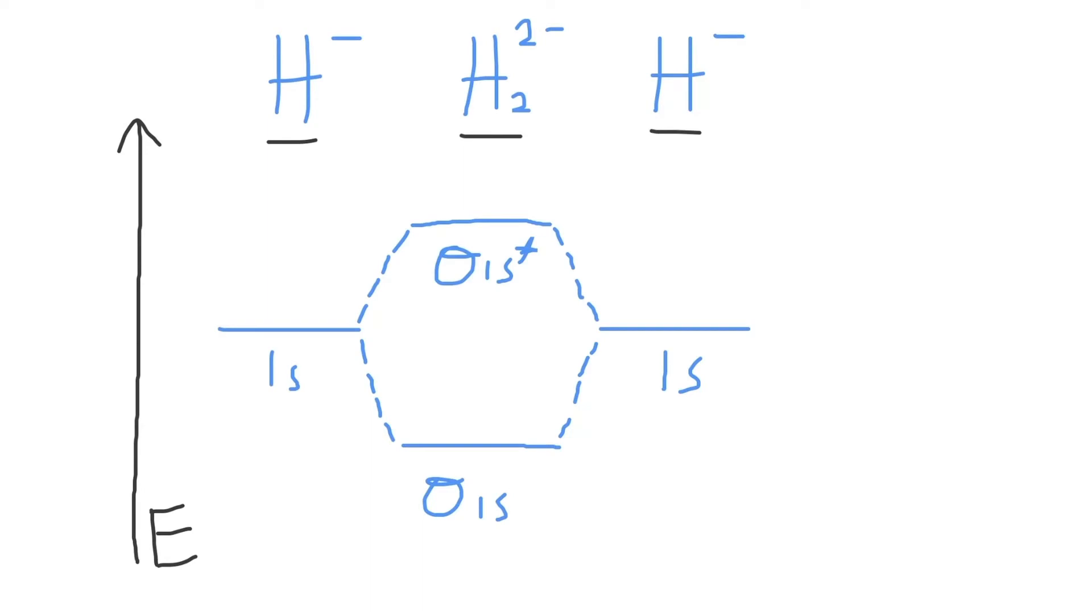So, if we add 1 electron to the original 1 electron of each hydrogen atom, we find that these hydrogen anions will each have 2 electrons. And that means H2 2- by adding together 2 and 2 will have a total of 4 electrons.